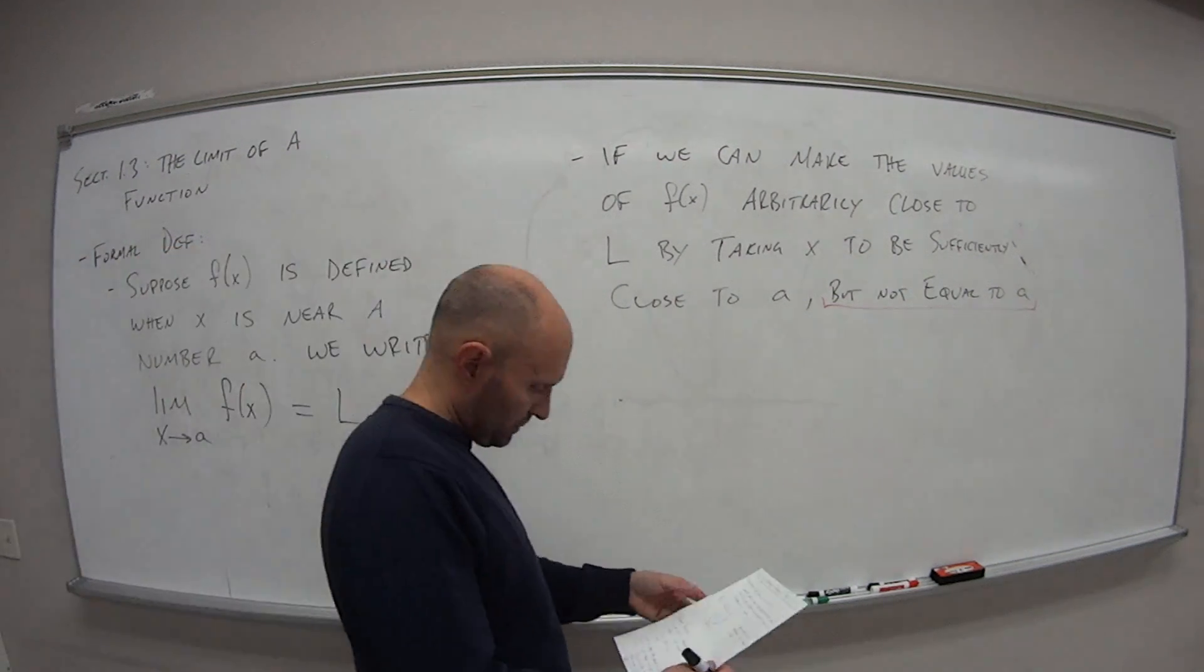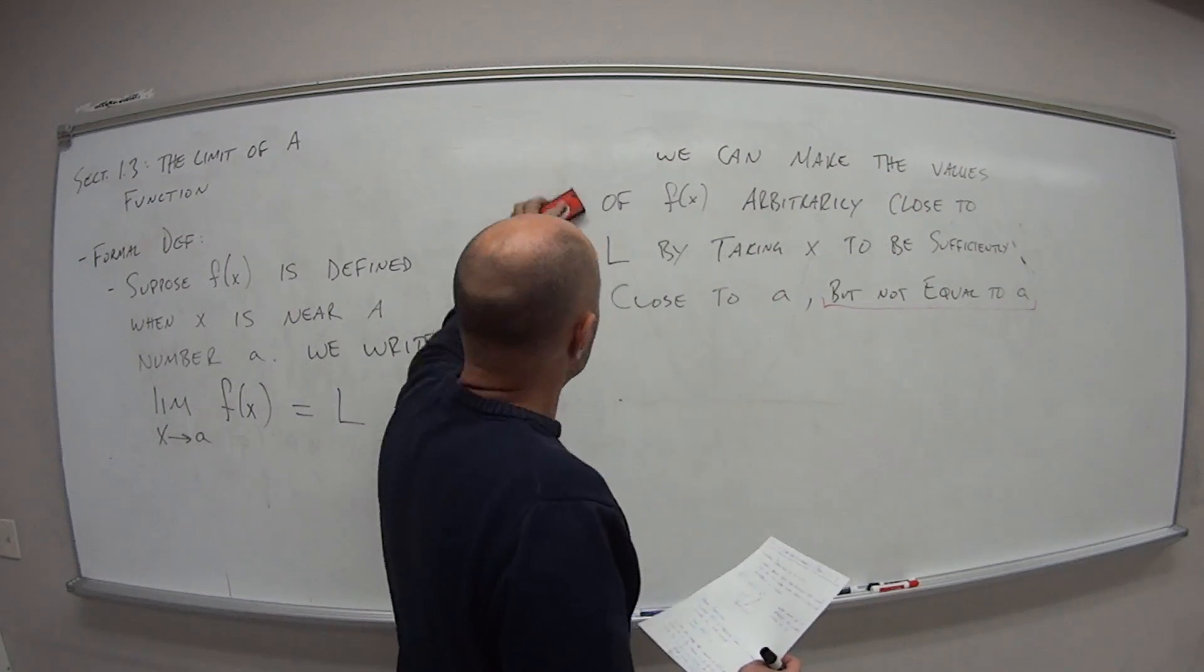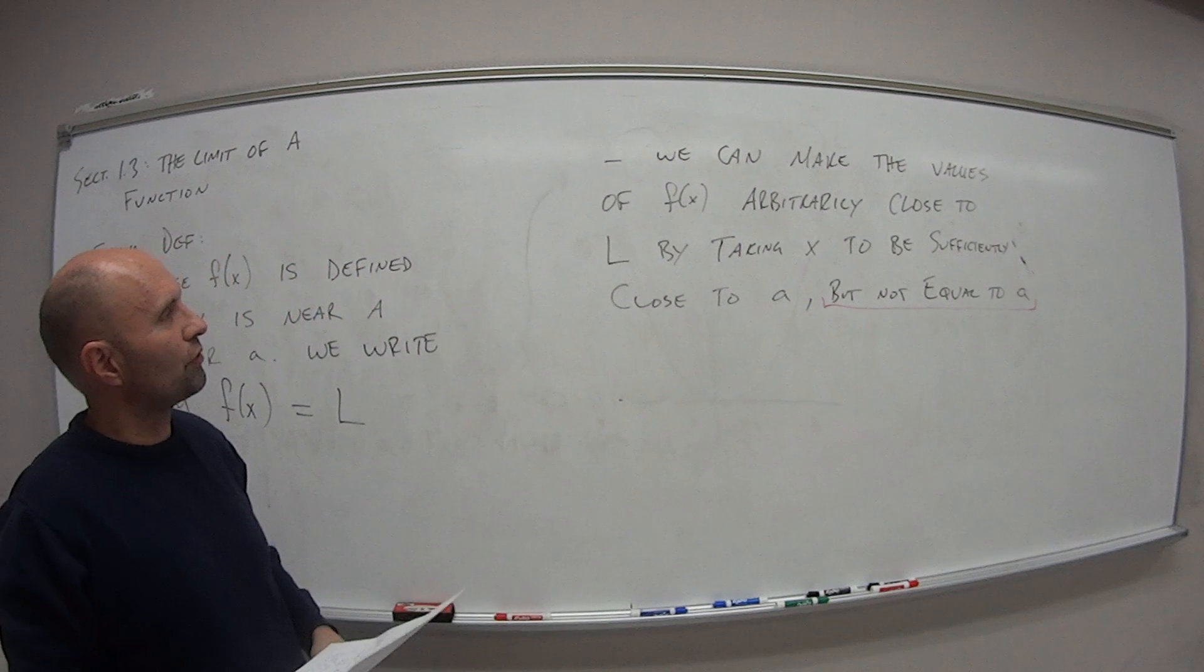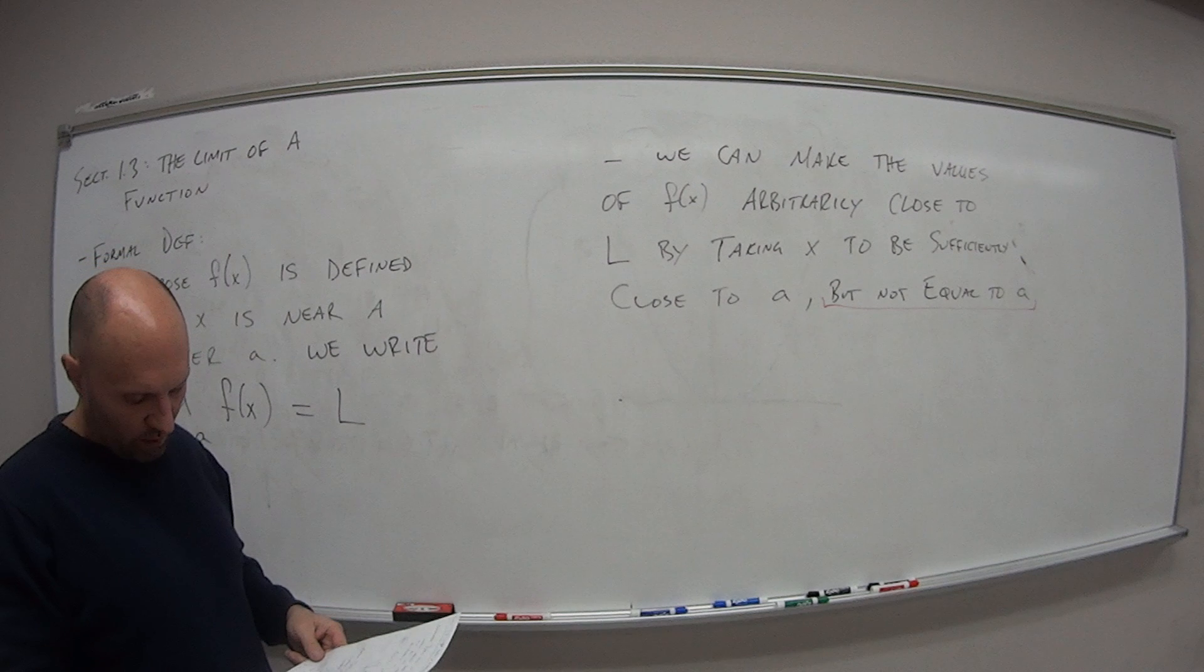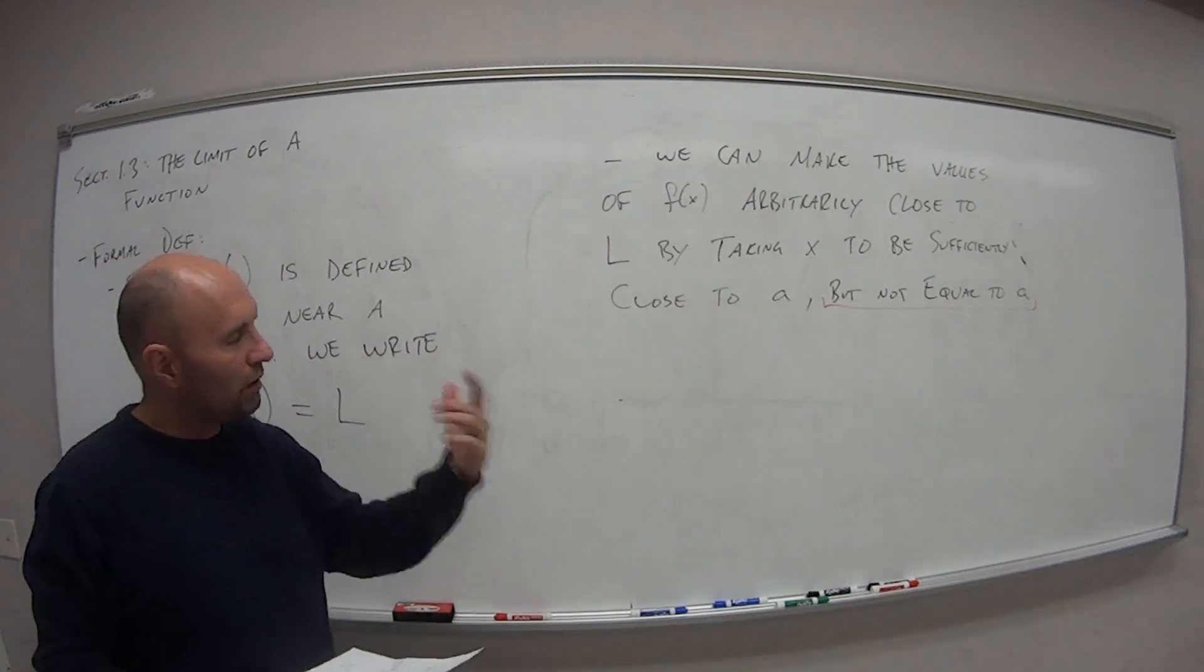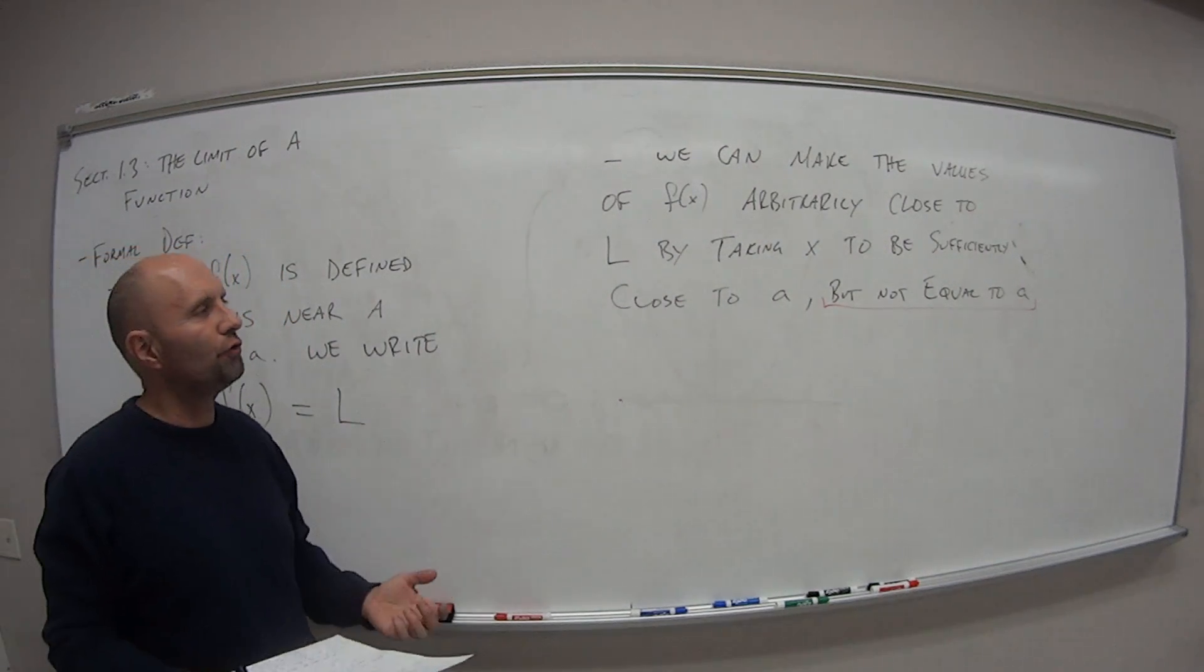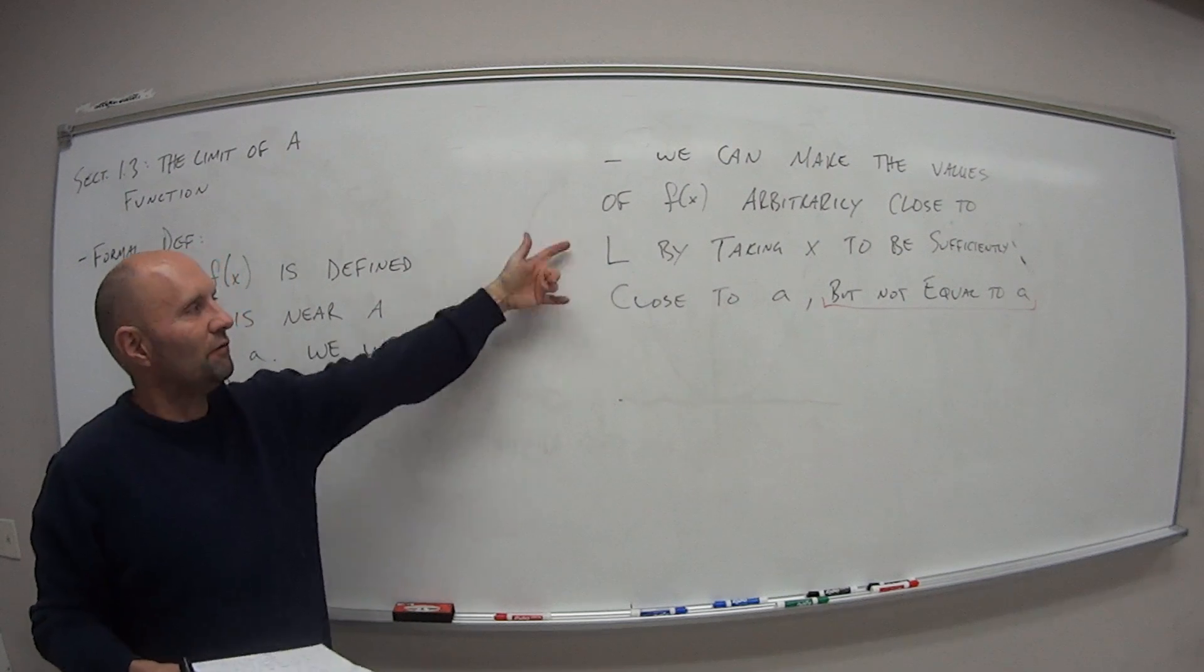We can make the values of f of x arbitrarily close to L, by taking x to be sufficiently close to A, but not equal to A. So again, we're not actually plugging that value of A into the function. We're finding the values very close to it. And what values does that give us for our limit value L?